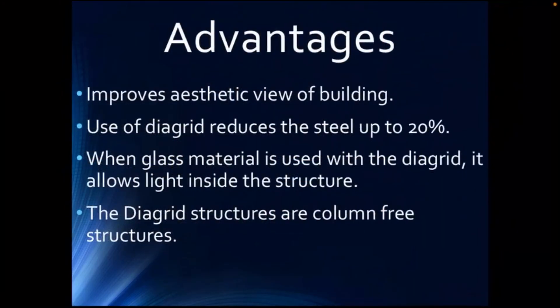Advantages of diagrid structures include an improved aesthetic view of buildings. Use of diagrid reduces steel consumption by up to 20 percent. When glass material is used with the diagrid, it allows natural light inside the structure. Diagrid structures are also column-free structures, enabling open and flexible interior spaces.